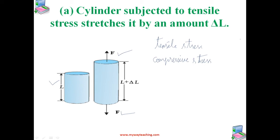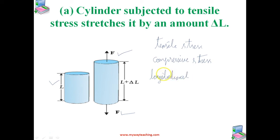Tensile or compressive stress can also be termed as longitudinal stress, since it is related to length. The length L changes to L plus delta L due to force F when extended, or L minus delta L when compressed. In both cases there is a change in length of the cylinder. The change in length delta L to the original length L of the body is known as longitudinal strain.